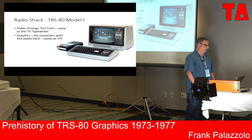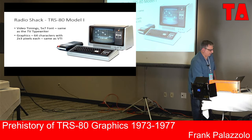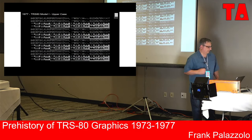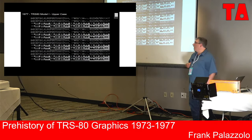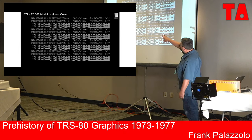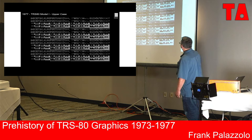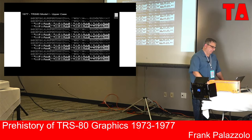Finally, 1977 — TRS-80 Model 1. Five by seven font. Graphics the same as the VTI. This is a picture of the Model 1 in its original incarnation and its fonts. The pixels start off black on the left and become white on the right. It's all uppercase — there are no descenders. This is the uppercase-only version.